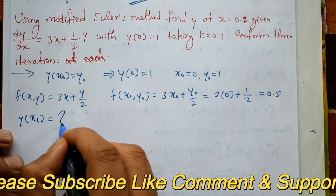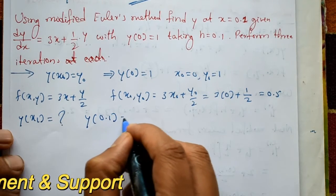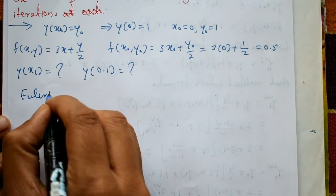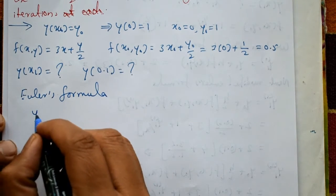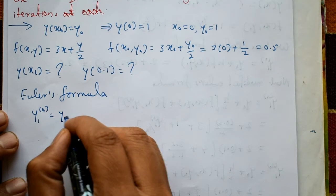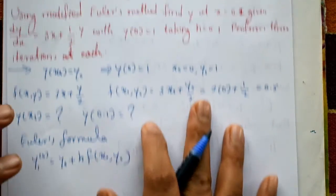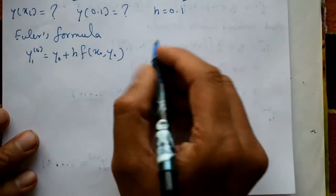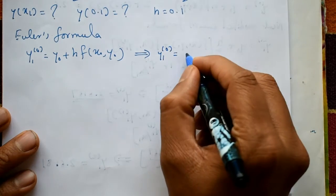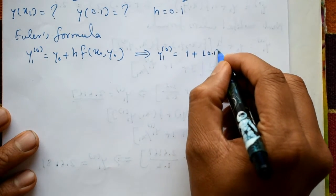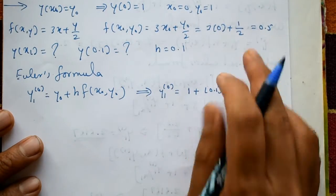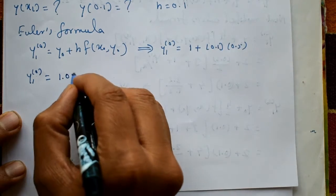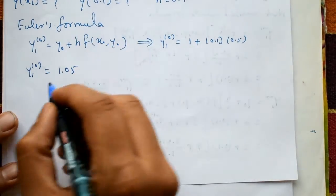We need to find y(x1) = y(0.1). First, apply the basic Euler's predictor formula: y1⁰ = y0 + h · f(x0, y0). With h = 0.1, this gives y1⁰ = 1 + 0.1 × 0.5 = 1.05. This is the approximate (predictor) value.